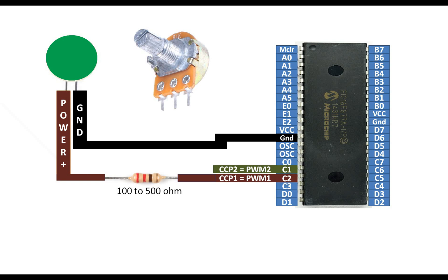Then I am going to add a knob — a potentiometer — in the circuit, and I will program it so that whenever it is rotated, brightness will increase or decrease. It has three pins: name the left one as ground, the right one as 5V — you can shuffle these two pins, it only changes the direction. The center pin is the adjustable pin, like in any potentiometer, one pin is always the adjustable pin.